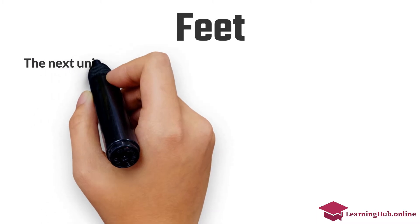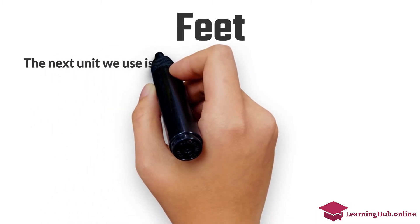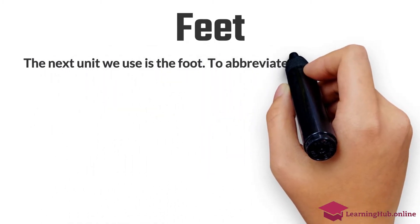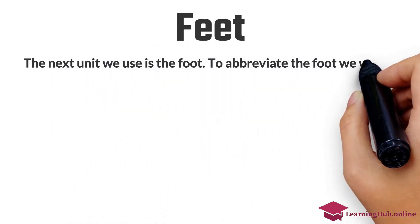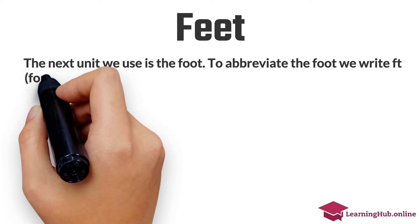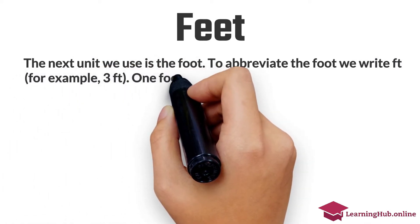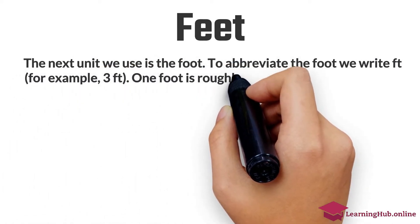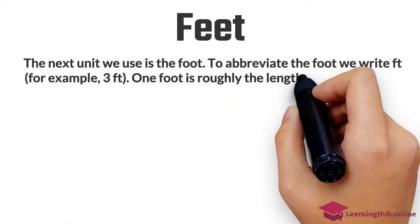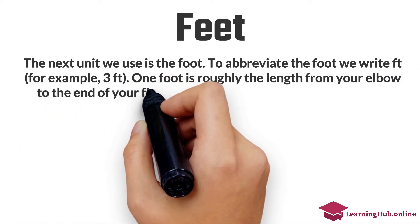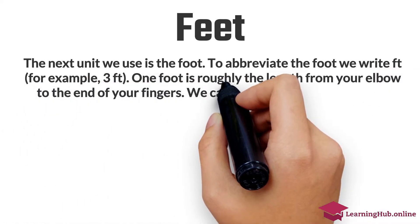Feet. The next unit we use is the foot. To abbreviate the foot, we write FT — for example, 3 FT. One foot is roughly the length from your elbow to the end of your fingers.